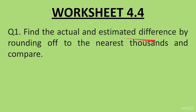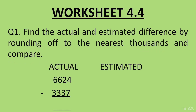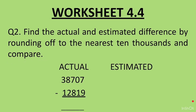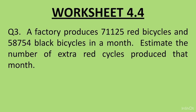Question 1: Find the actual and estimated difference by rounding off to the nearest thousands and compare. Numbers: 6624 and 3337. Question 2: Find the actual and estimated difference by rounding off to the nearest ten-thousands and compare. Numbers: 38707 minus 12819. Question 3: A factory produces 71125 red bicycles and 58754 black bicycles in a month. Estimate the number of extra red cycles produced that month.